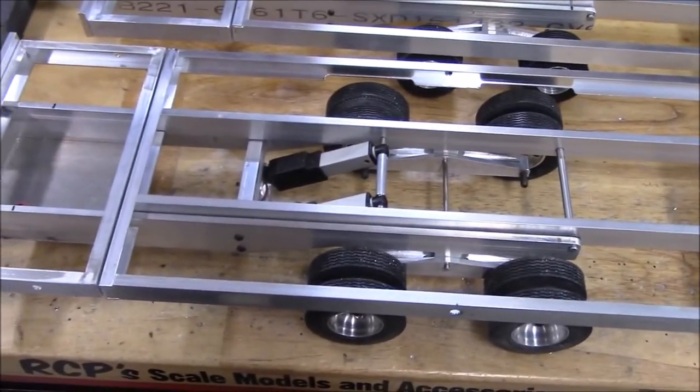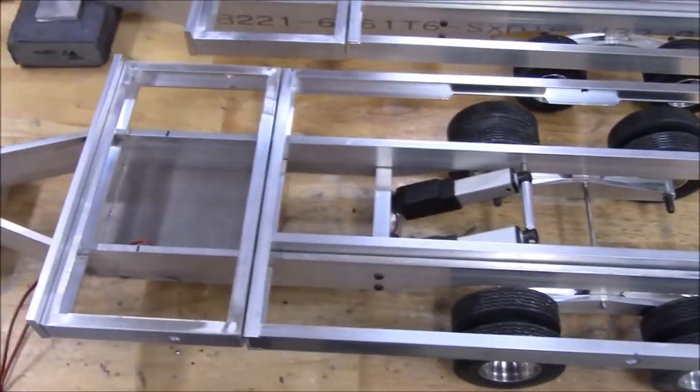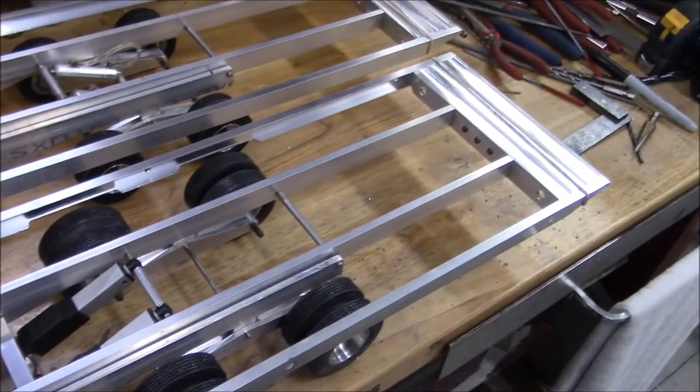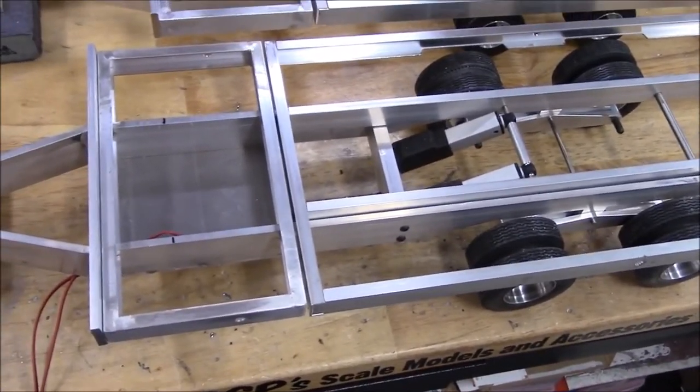When I used them in the previous trailer, which was almost the same as this one, it lifted my 955 1:10 scale model, which is about 20 pounds, lifted that no problem. So I think any of the 1:14 scale track loaders or whatever should lift it no problem.